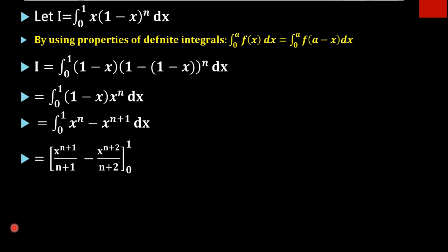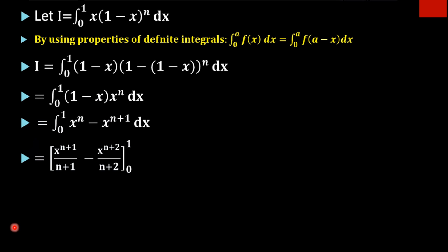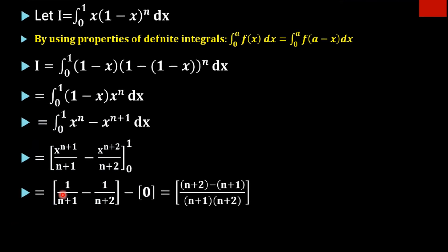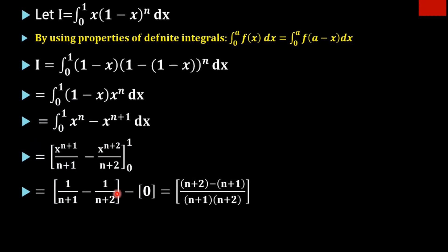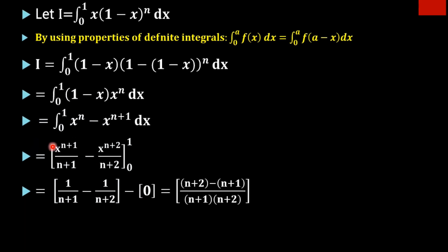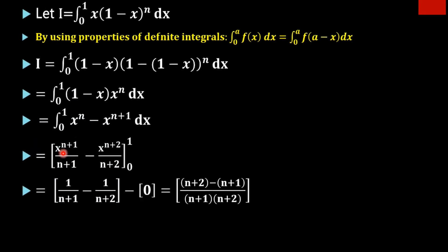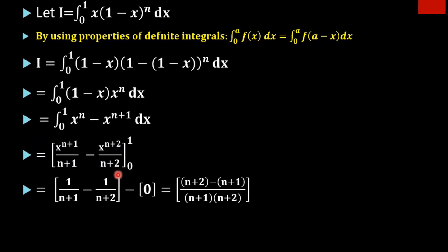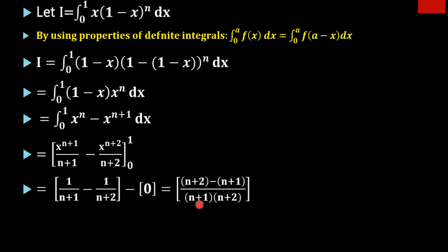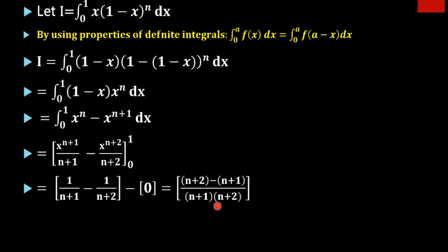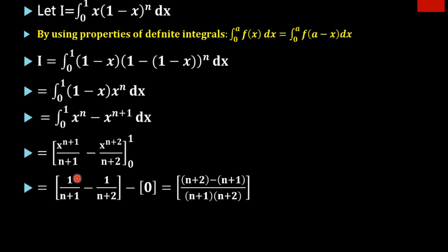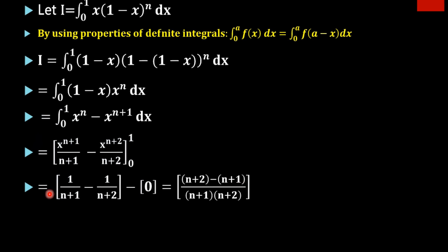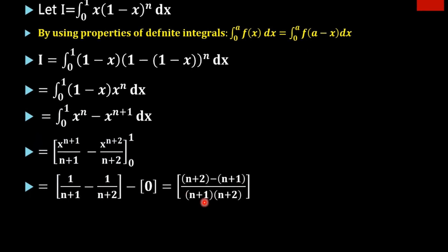Applying the upper limit 1 gives 1 divided by (n plus 1) minus 1 divided by (n plus 2). Applying the lower limit 0 gives 0. Taking LCM, we get (n plus 2 minus n plus 1) all divided by (n plus 1) into (n plus 2).